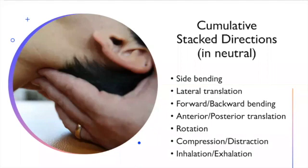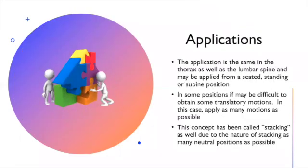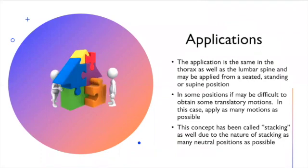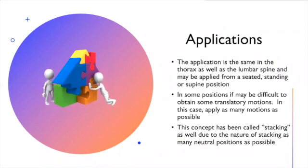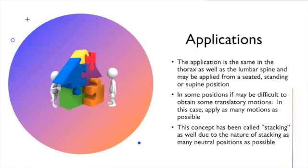Another word that has been used in this type of technique has been called stacking by others. You're trying to get as many of these directions, the middle spot, as many as you can. It's not necessary to get them all or to feel confident that you got all of these directions. If you can get a few of them and then ask the patient to breathe in or breathe out, you may get some reduction of the tension of the segment. You can apply the same idea to the thorax, the lumbar spine, from seated position, standing or supine. Some positions are a little difficult to get some of the transitory motions.